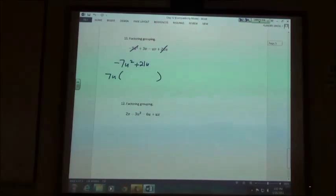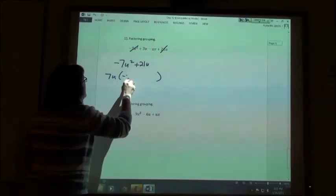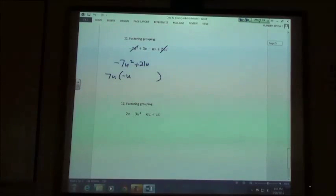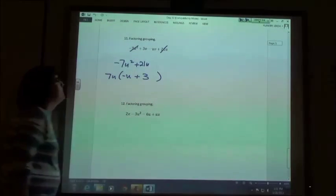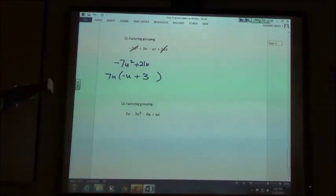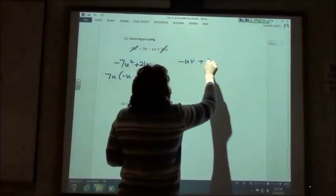So if I take negative 7u squared and I divide it by 7u, I get negative u. And if I take 21u divided by 7u, I get plus 3. So of those other two terms, which one should I write down first? The negative uv. Negative uv plus 3v.